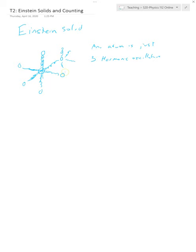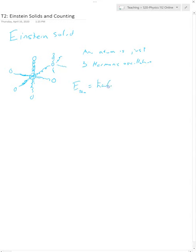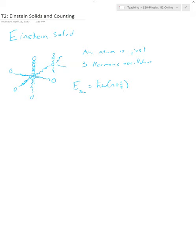The cool thing is we've already done the harmonic oscillator and written down the energy. The energy of a single oscillator is equal to H-bar omega times (n + 1/2). It turns out that if you have three harmonic oscillators going in different directions — X, Y, and Z — that are perpendicular to each other, they actually act independently, just the same as having three separate harmonic oscillators.